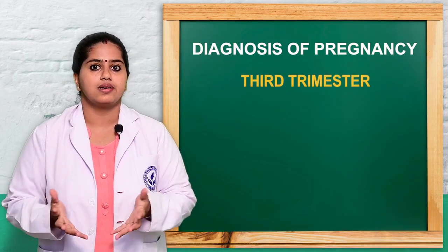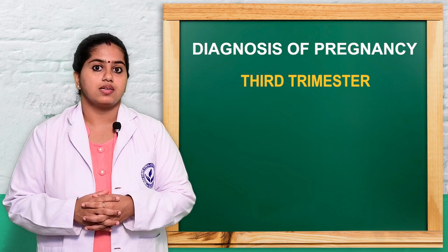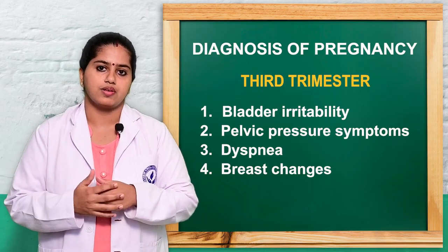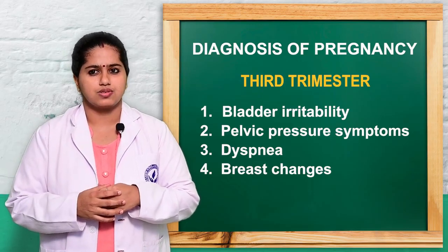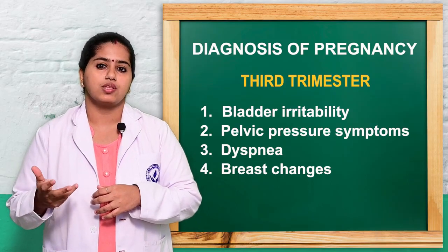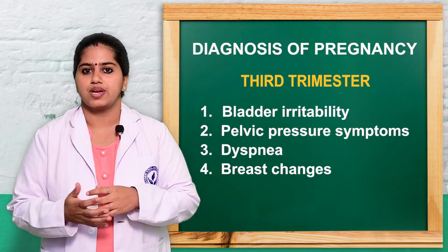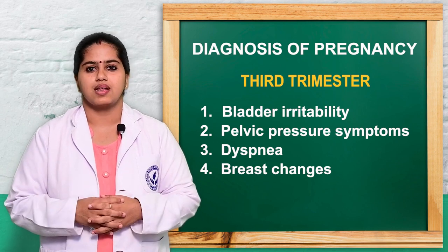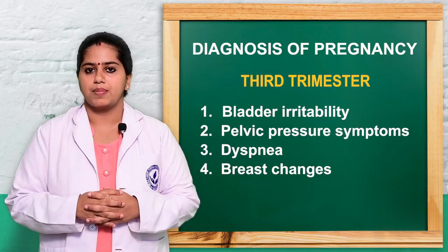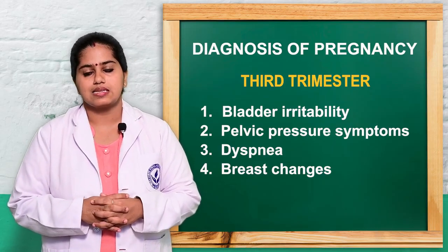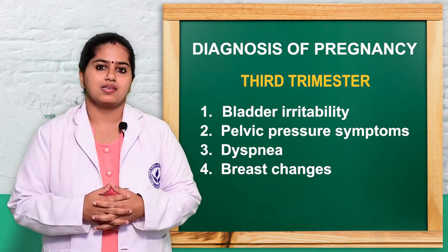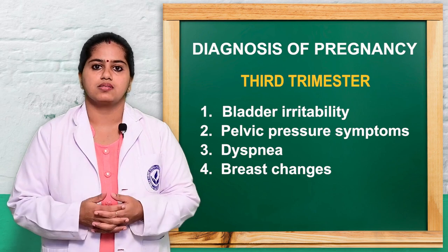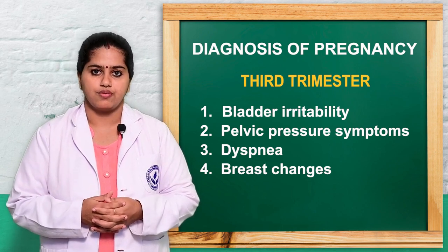The third trimester is a crucial period as very fast growth and development of the fetus takes place. Subjectively, women can experience more bladder irritability and urinary symptoms because the gravid uterus pushes into the pelvic region, causing pressure symptoms such as rectal fullness and pelvic pressure. Dyspnea and shortness of breath can occur due to the enlarged abdomen.